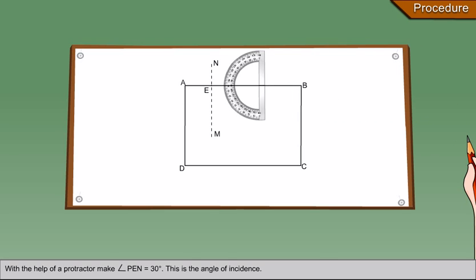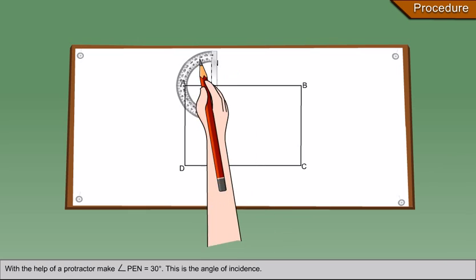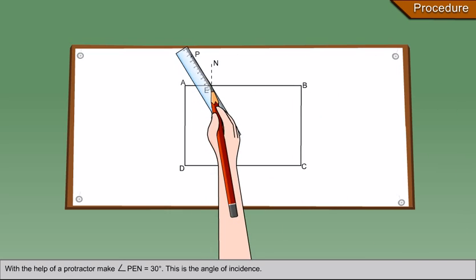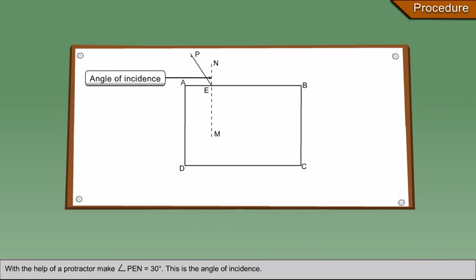With the help of a protractor, make angle PEN equals 30 degrees. This is the angle of incidence.